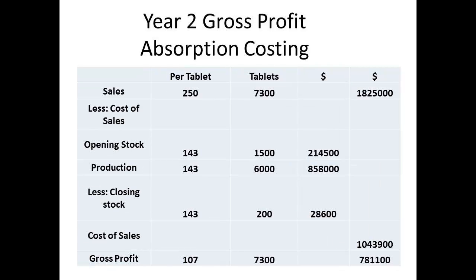In year 2, the sales amounted to $1,825,000. Now 7,300 tablets were sold and 6,000 were produced. There were already 1,500 tablets in inventory. The new figure for closing stock is 7,500 less 7,300, which is 200 tablets. The value of the closing inventory is 200 times $143, which is $28,600. Cost of sales is $1,043,900, giving a figure for gross profit of $781,100.